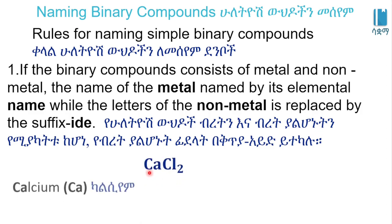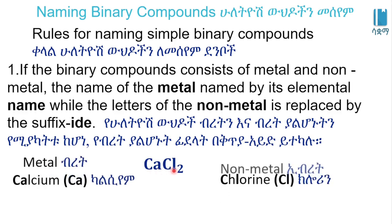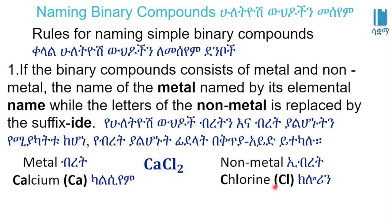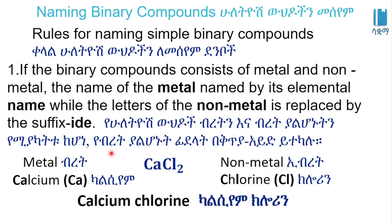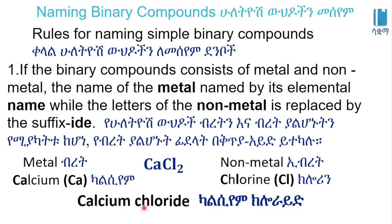For example, CaCl — calcium is the metal, and chlorine is the non-metal. So if you have chlorine, you drop the ending and add -ide, making it chloride. So calcium chloride — that is the name of this compound.